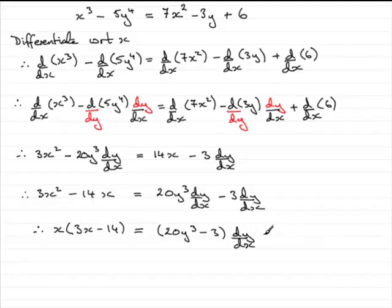It's a simple step now just to make dy by dx the subject. Because all you need to do is divide both sides by 20y cubed minus 3. So dy by dx equals x bracket 3x minus 14 all divided by 20y cubed minus 3.